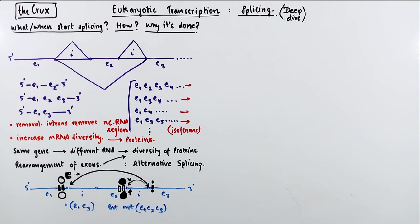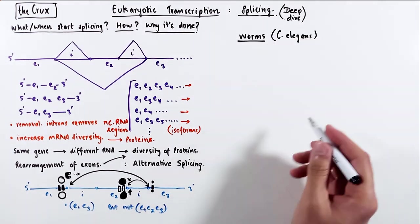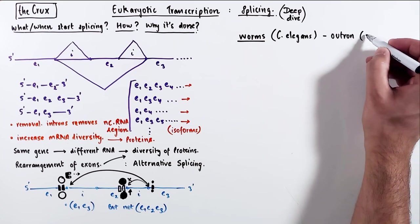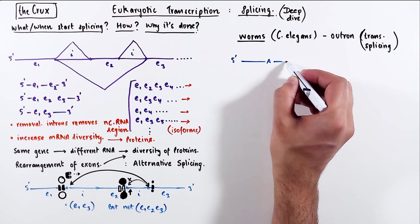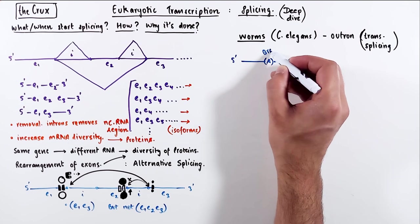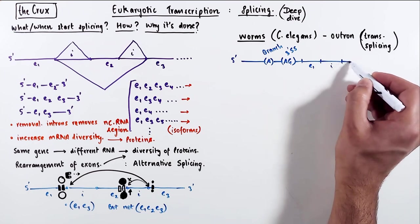So far, we have considered introns and exons, but in worms, the model organism being C elegans, exists another type of element known as an outron, which is involved in the process of trans splicing, which means that exons from two different RNAs are joined together. Let's see how that works.